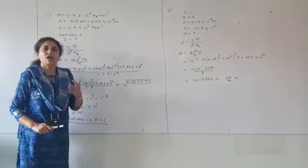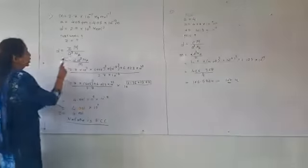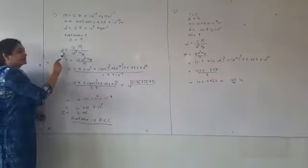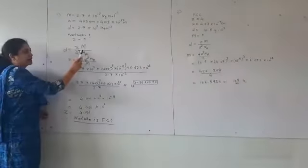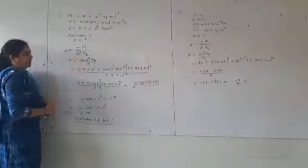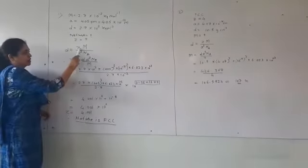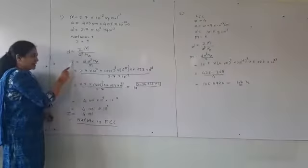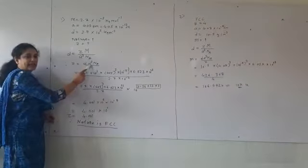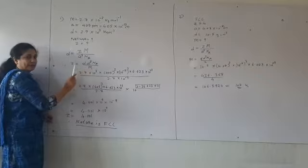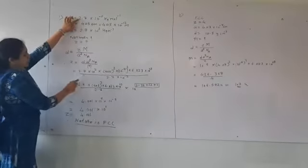Our formula is density equals Z divided by a³ · NA. Z is unknown, so we have to keep it on one side. We have changed the formula as Z equals D · a³ · M divided by NA. Substitute the values from here.